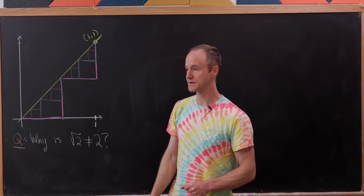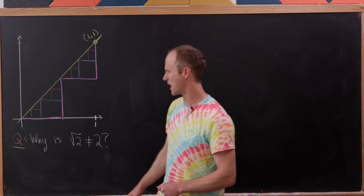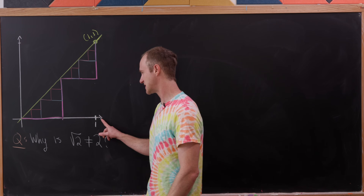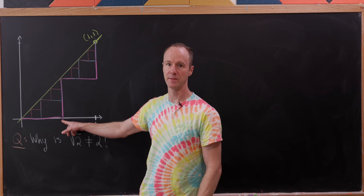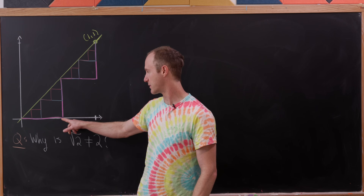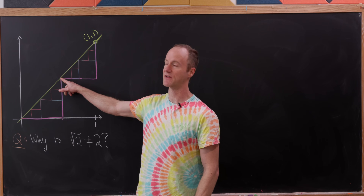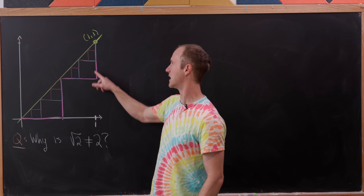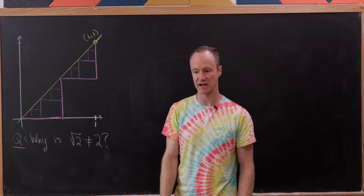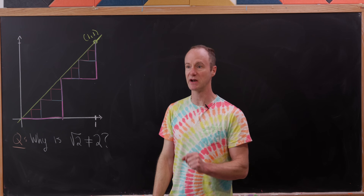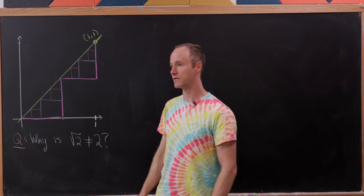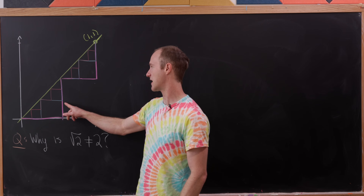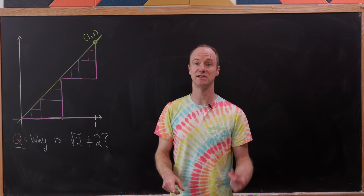But we could also approximate this line segment with a collection of four line segments: on the x-axis from 0 to one-half, then a vertical line segment up to the point (1/2, 1/2) on our original line, then another horizontal line segment, and then another vertical line segment. That's a pretty bad approximation, but observe that the length of that approximating collection is one-half plus one-half plus one-half plus one-half — in other words, it's 2.